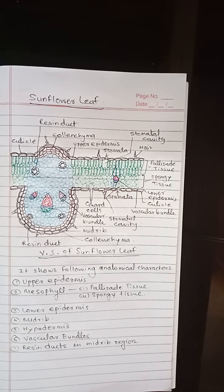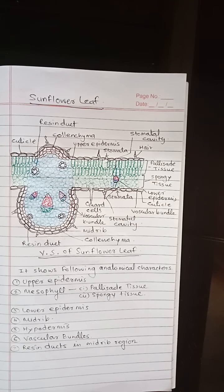Resin ducts are present toward the upper as well as lower side of the mid rib. Along with resin ducts, the vascular bundles are present in the mid rib region and in the lamina region. The vascular bundles are conjoint, collateral, and open type, and endarch.